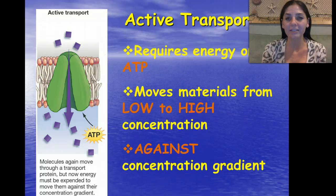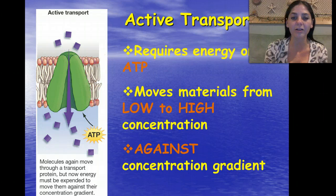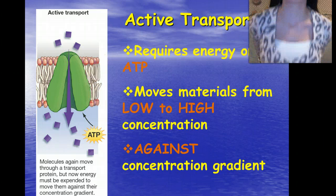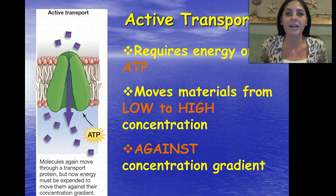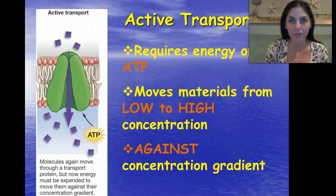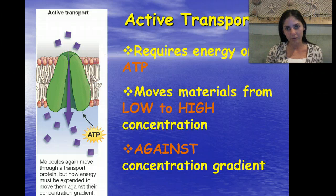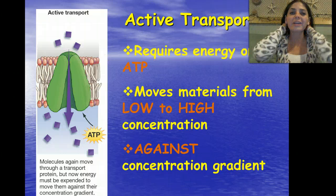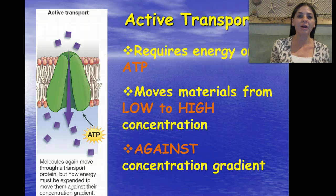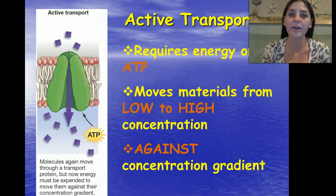Active transport — think of active, ATP. It requires energy and it moves materials from a low to a high concentration, against the concentration gradient. Like if I wanted to stand up, I'm going from low to high — that's going to require energy, using my arm muscles and leg muscles. If I were to sit down, I'm going from high to low and I'm not going to use any energy just to plop myself on the couch. But going from low to high concentration requires energy. Same thing occurs in cells — whenever we're going against a concentration gradient, that requires energy.